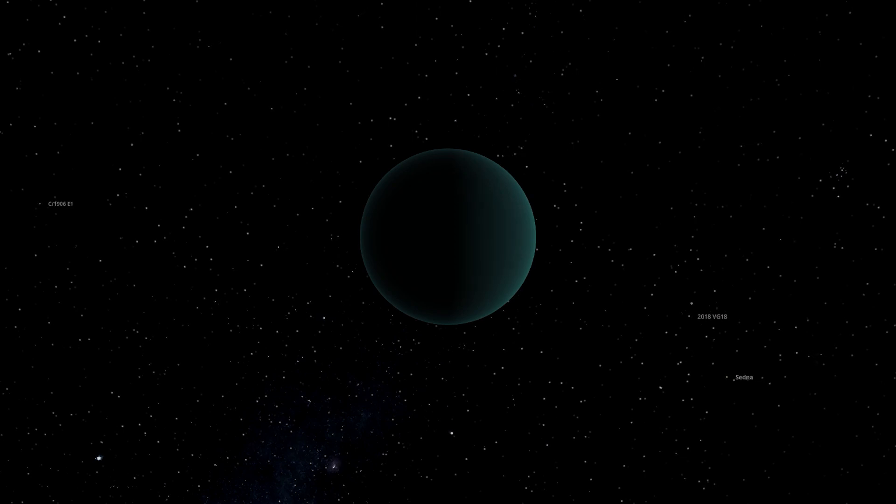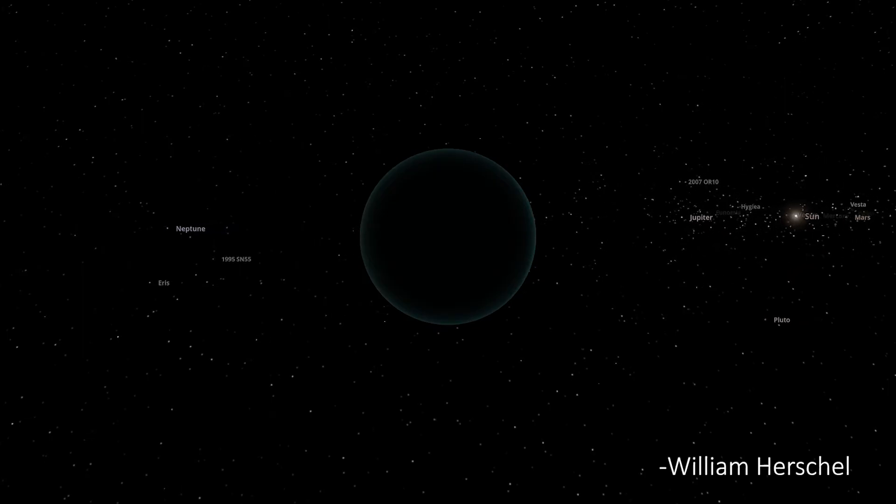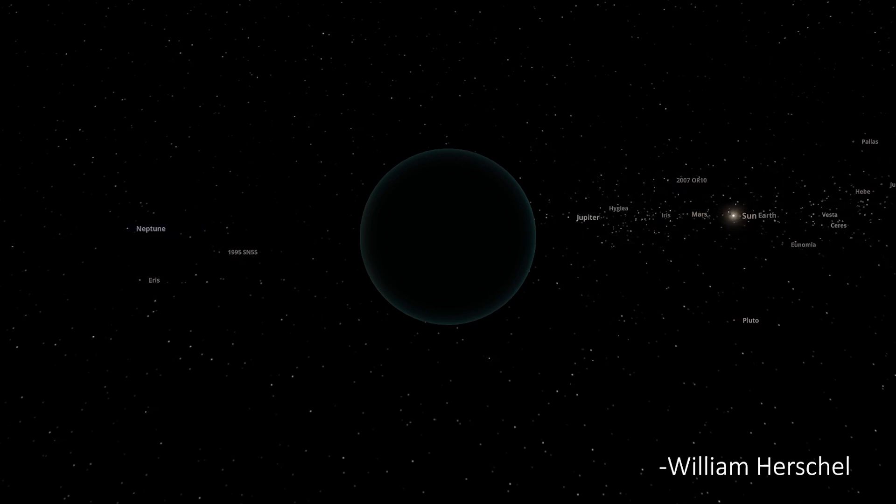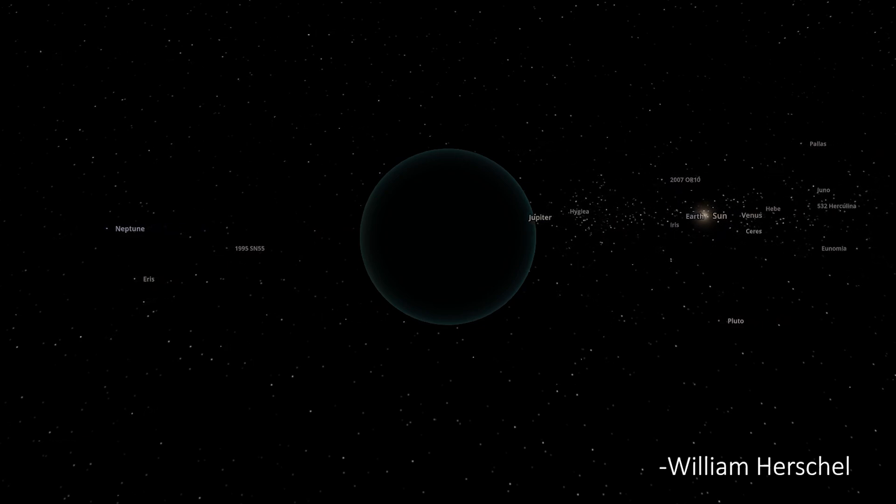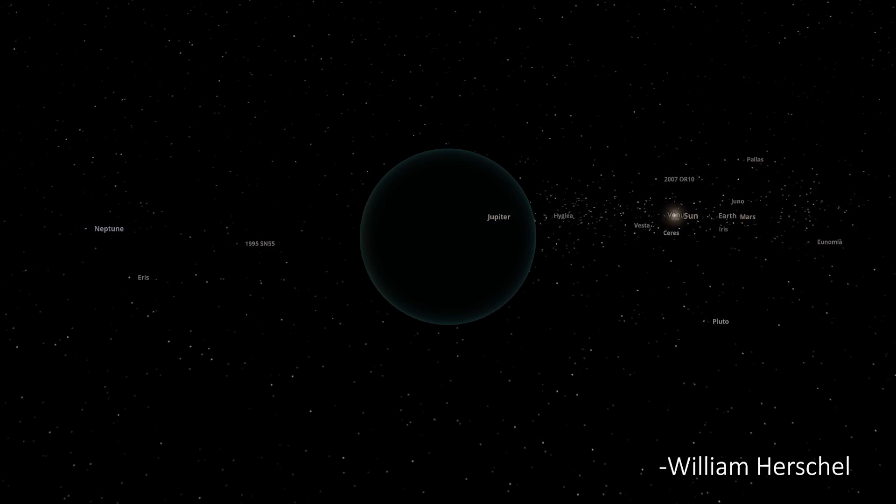Others shared that opinion as well and continued observations and calculations. Two years later this new planet was officially accepted and Herschel was declared as the discoverer of that new planet. And he was awarded with an annual payment from King George III.